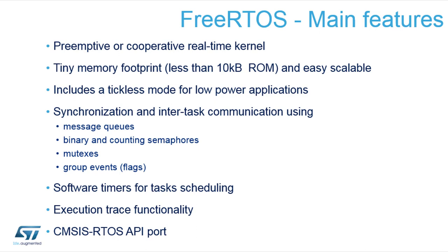As a good operating system should do, FreeRTOS gives you means for inter-task communication and synchronization of different hardware. It gives you queues for messages where you can pass a message from a task to another task, or from an interrupt to a task. It gives you binary and counting semaphores that allow you to guard a limited pool of resources, mutexes that allow exclusive access to one specific resource, and event groups where several different situations have to occur either serially or in parallel — and when all or just one of them happens, a waiting task can be awakened.